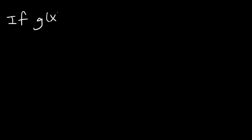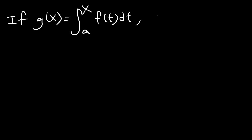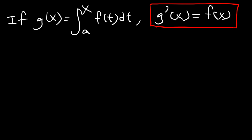In this video, we're going to talk about the first part of the fundamental theorem of calculus. If g of x is equal to the definite integral of f of t from a to x, then g prime of x is going to equal f of x. So if g is the antiderivative of f, then the derivative of g will equal f. The derivative of the antiderivative will give you the original function.